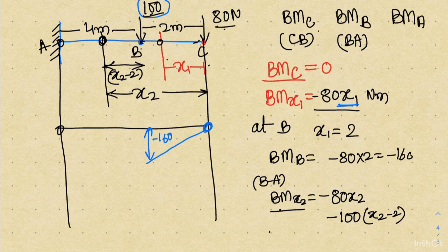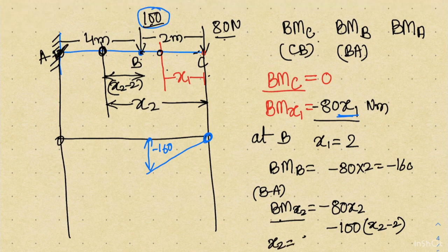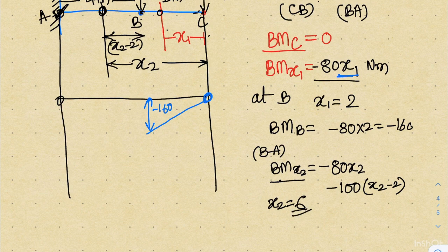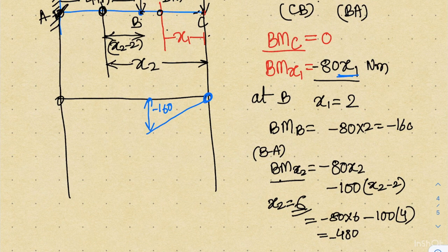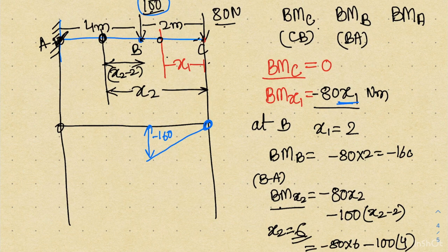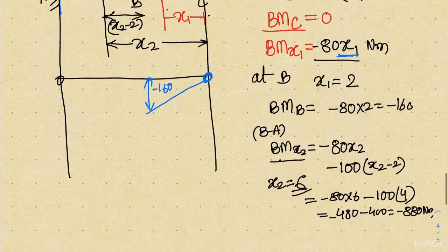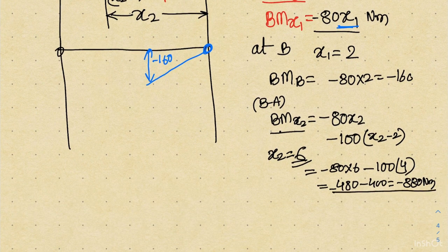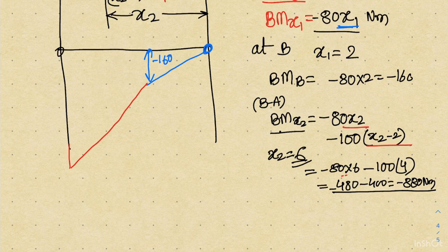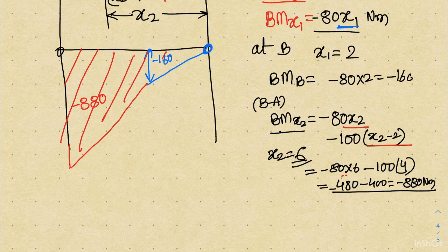At point A, x2 equals 6. Substituting: minus 80 into 6 minus 100 into (6 minus 2) = minus 480 minus 400 = minus 880 Newton-meter. So the bending moment at A is minus 880 Newton-meter. Since the equation is again linear in x2, the bending moment diagram from B to A is a straight line ending at minus 880 Newton-meter.